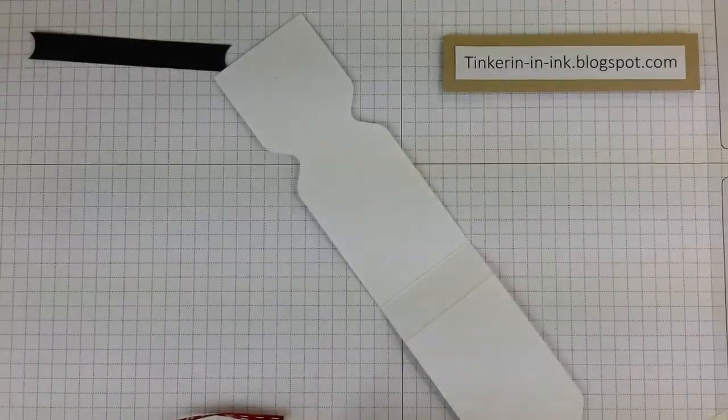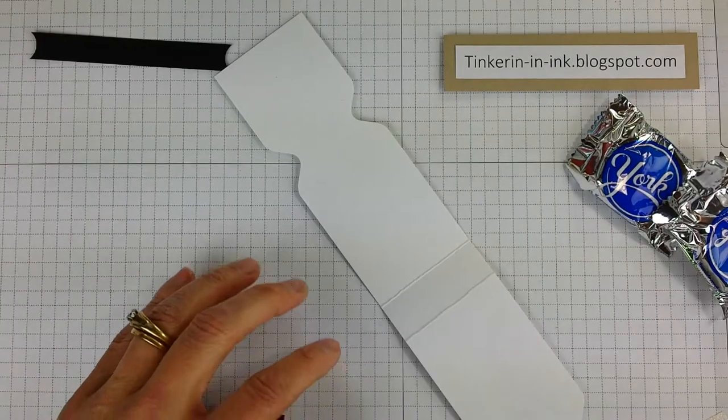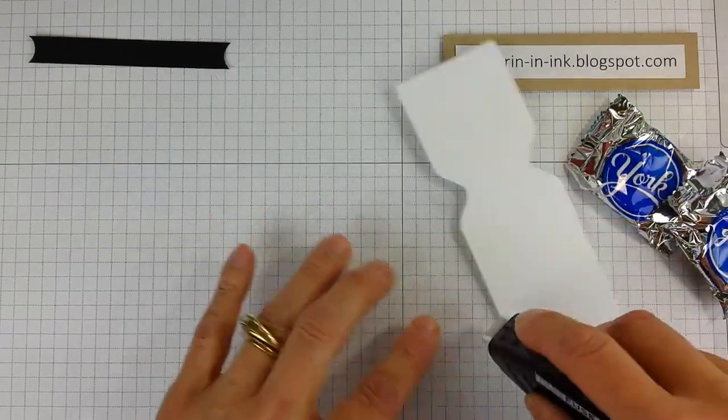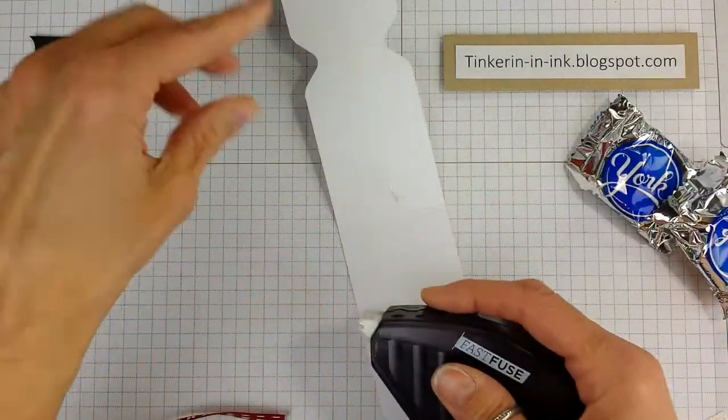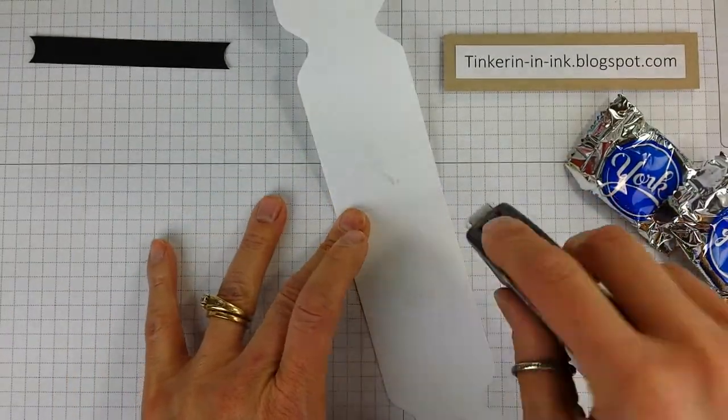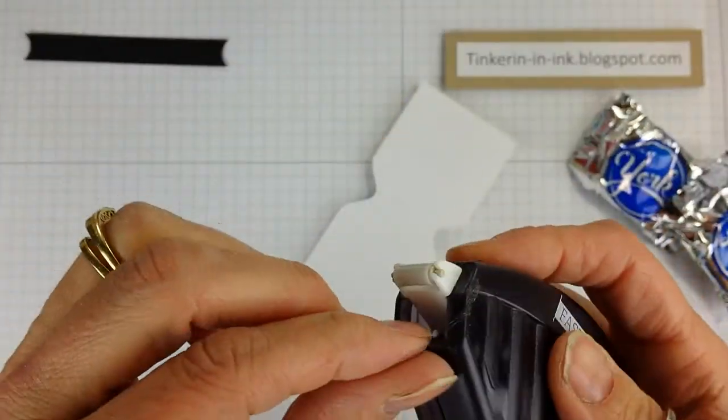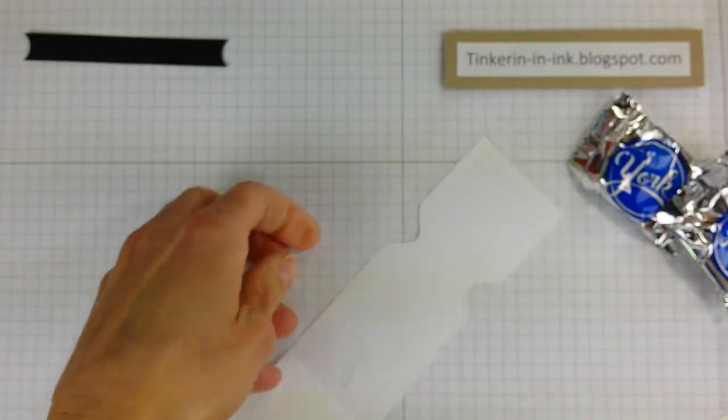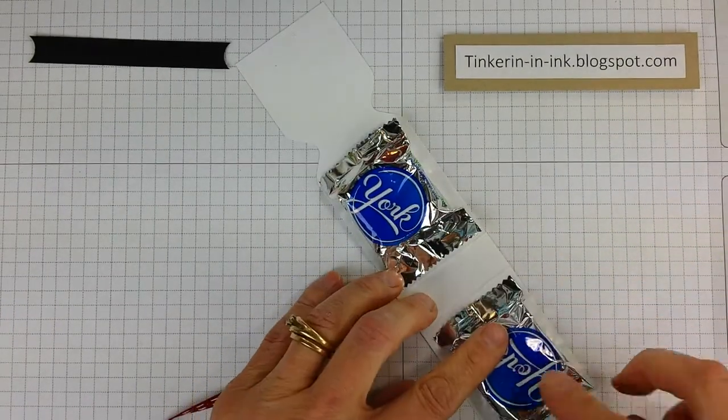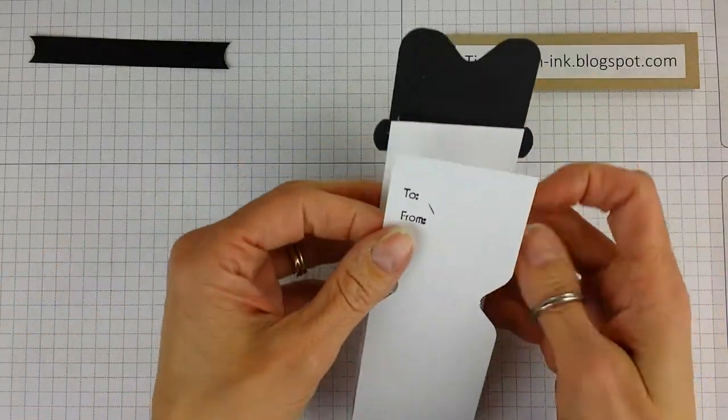So then we're going to use some York peppermint patties. Hang on. Just grab those really quick and get my fast fuse and we're just going to put a little dab down here and down here. I am so sloppy. And we're going to do one along the top just to tack it in place once we have the patties on there. And I'm just trying to make sure that it doesn't stick out above the shoulders. Close that in the back.